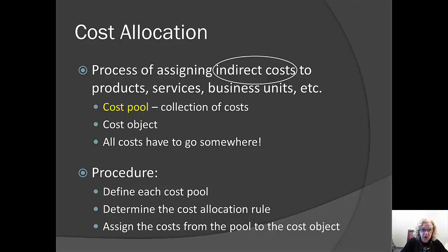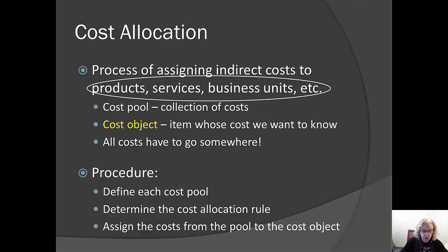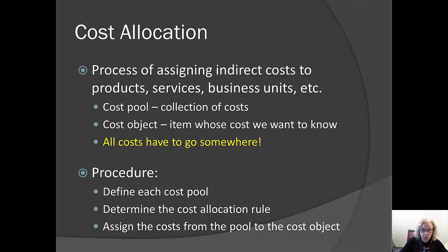So what are we going to allocate them to? We're going to identify cost objects. A cost object is the thing that we are trying to identify — how much does this thing cost us? We can choose any cost object we want depending on the question we're trying to answer. It could be assigning costs to the various products we make, the various services we perform, or various business units within our organization. The general rule is all costs have to go somewhere, and that rule cannot be broken.